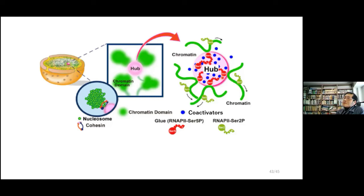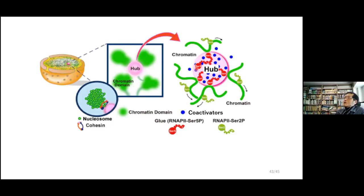The possible origin may be as follows. The Nanog super enhancers form liquid droplets of coactivators, and promoters of Nanog and relevant genes weakly bind on these coactivator droplets. This would be rather ubiquitous in human cells, as there are many super enhancers. These droplets of coactivators may work as hubs that weakly tether chromatin chains, constraining chromatin motions. When RNA polymerase action was inhibited, this binding constraint would become weaker, so chromatin chains would become free from this half-constraint and move in a more enhanced way.